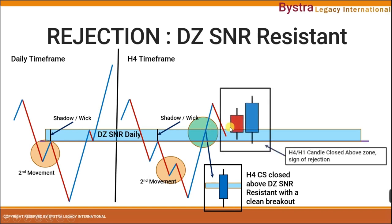We look for confirmation of rejection when the price comes back to this area to test it as a new support. Since this is the H4 time frame, the breakout candle also has to be at the H4 time frame, because the danger zone is at the daily time frame.